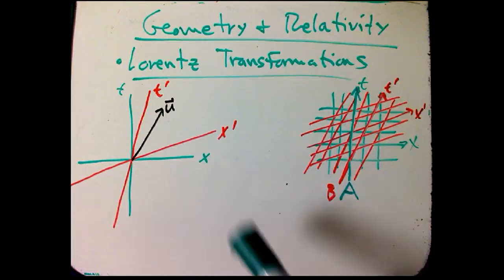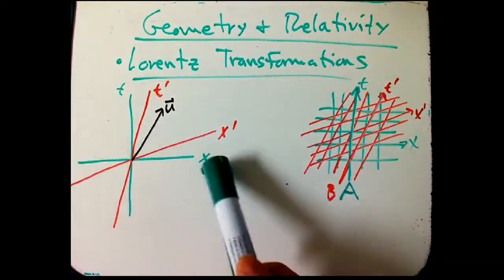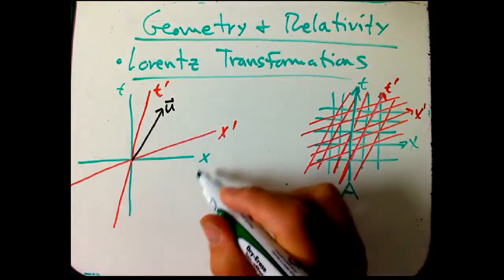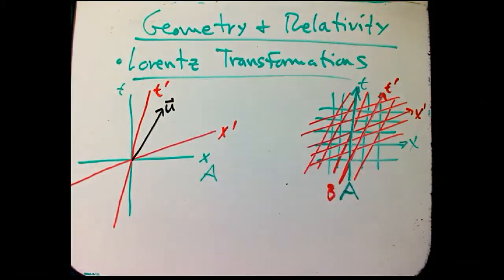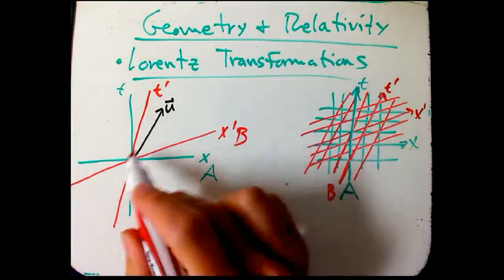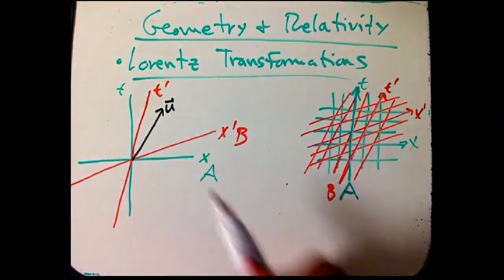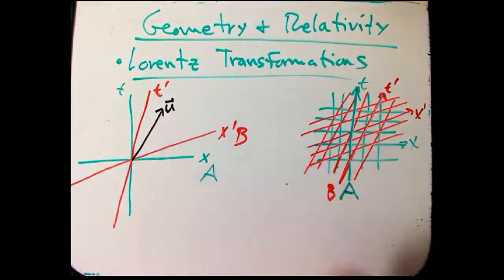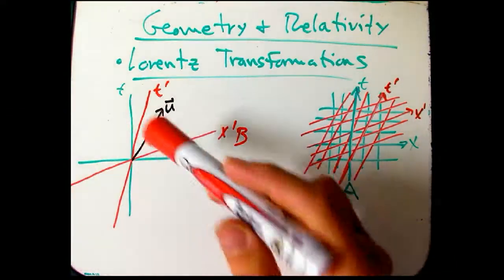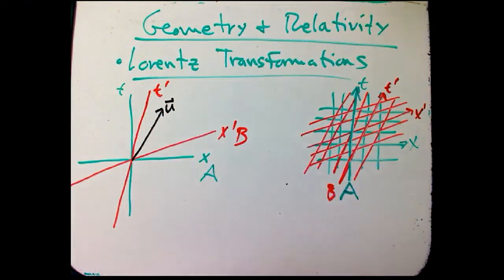So to simplify the picture, what we've got is just the X and T axes for observer A, and the X prime and T prime axes for observer B. And we want to describe some vector U. That could be a velocity vector, a momentum. It could just be a position of something. It could be anything that's reasonably described as a vector.